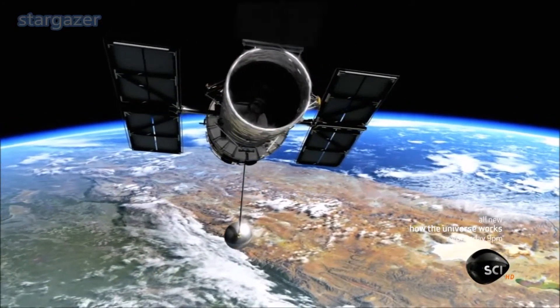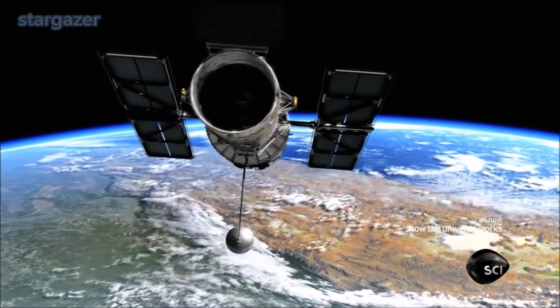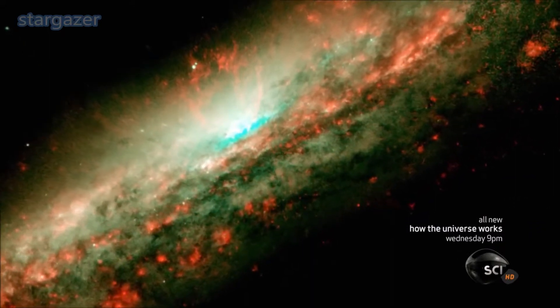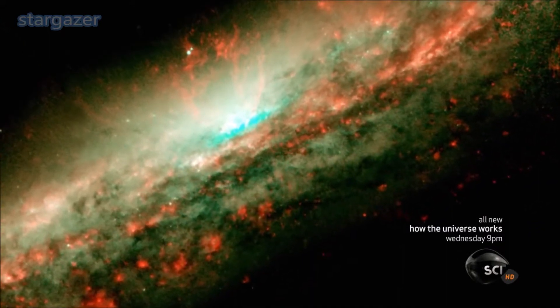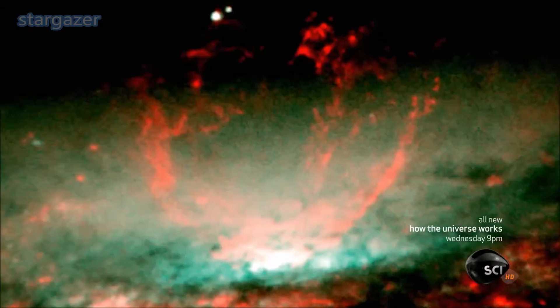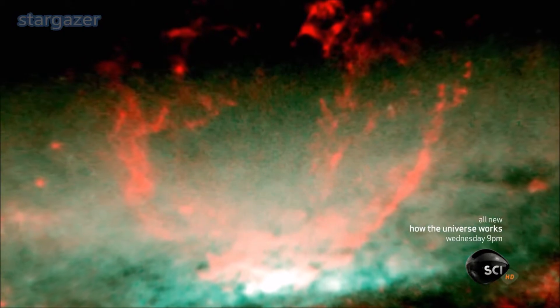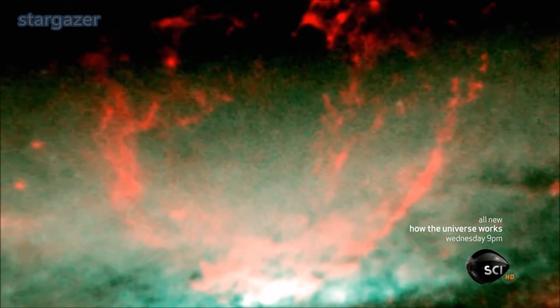The Hubble Space Telescope captured this stunning image of the galaxy NGC 3079. At its center, a superwind, a storm on a truly cosmic scale.